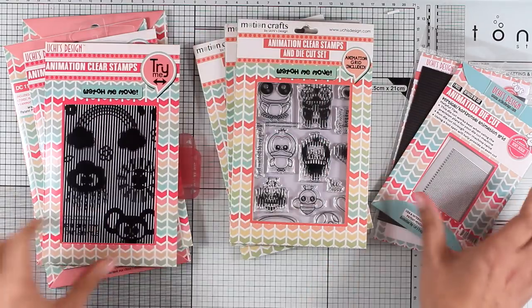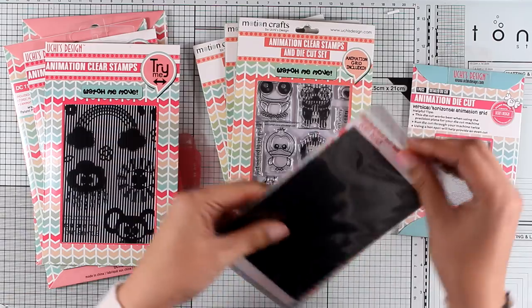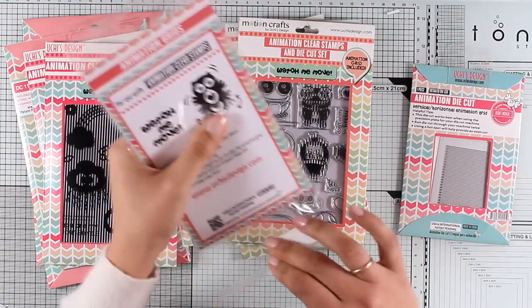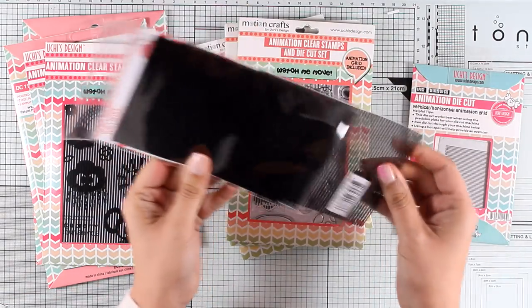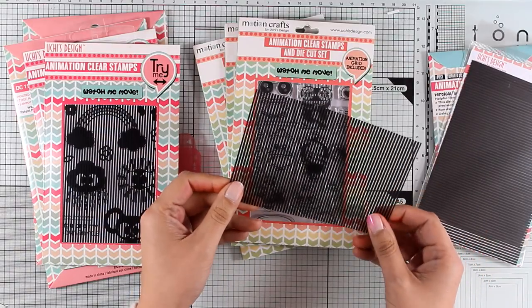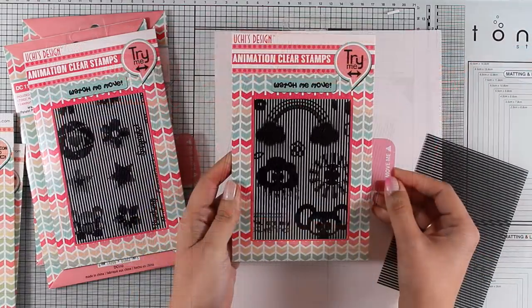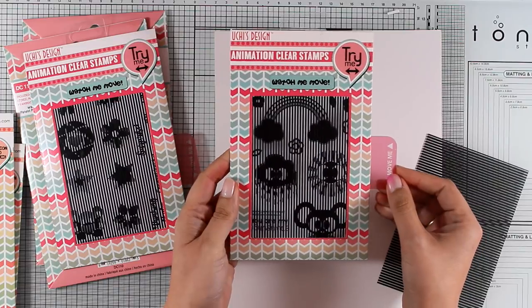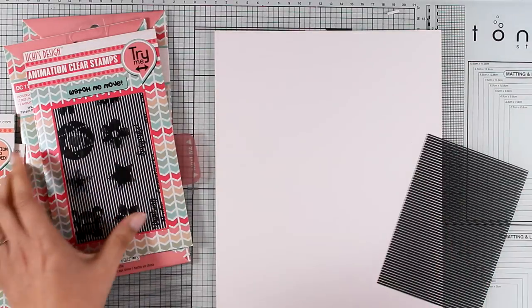There is tons of inspiration as well as lots of giveaways. Now if you're not familiar with this company, the idea is that you stamp one image and then you need one of those grids to put on top of the image. When you move the grid, you see the image animated.